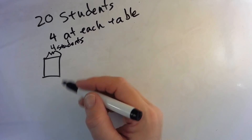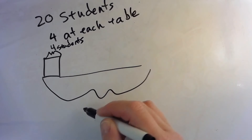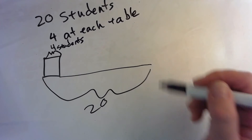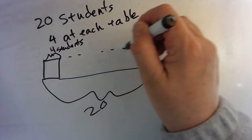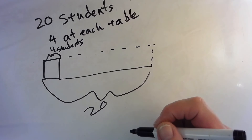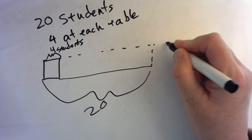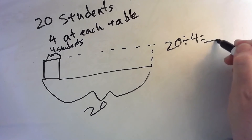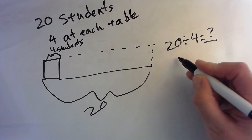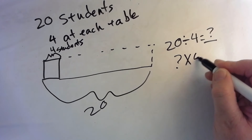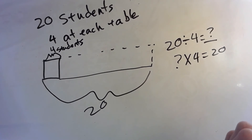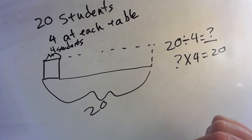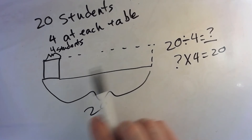I know that the whole needs to seat 20 students, but we don't know yet how many tables we need. Our division problem is: 20 divided by 4 equals the unknown quotient. Another way to write it is: question mark times 4 equals 20. The unknown means the number of groups.